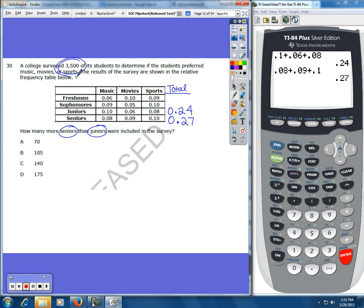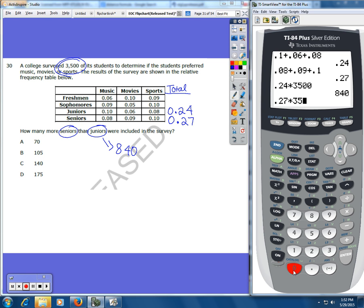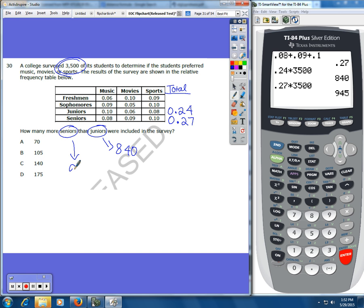For juniors I'm going to do 0.24 times 3,500 and that'll give me the number of juniors. So juniors were 840.